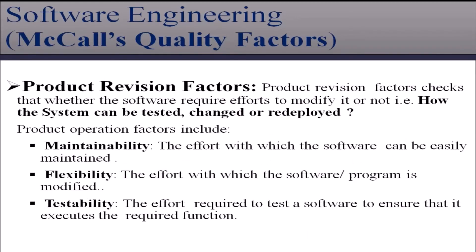Second factor is product revision factors. Product revision factors check whether the software requires effort to modify it or not, that is, how the system can be tested, changed, or redeployed. It includes maintainability, flexibility, and testability. Maintainability is the effort with which the software can be easily maintained. Flexibility is the effort with which the software or program is modified. Testability is the effort required to test a software to ensure that it executes the required function.